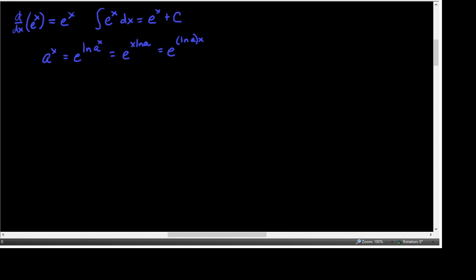So for this, I do need to say that for it to be an exponential function, a must be a positive number, and it may not be 1. Because if it is 1, 1 repeatedly multiplied by itself never changes.